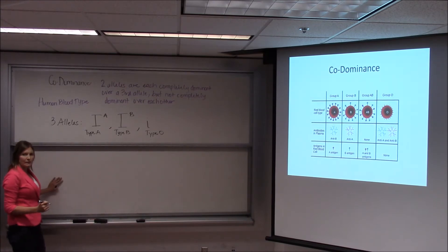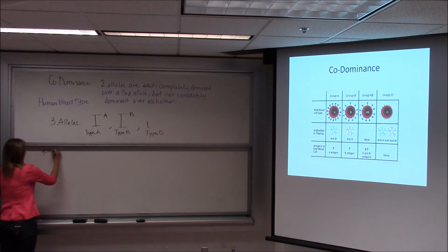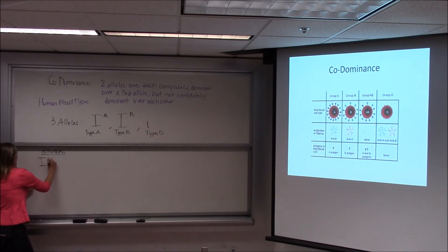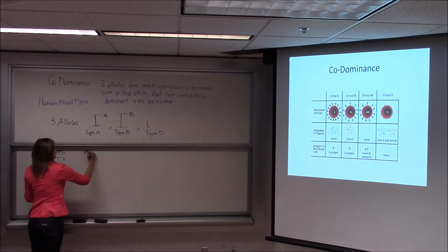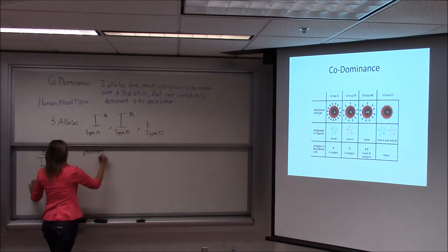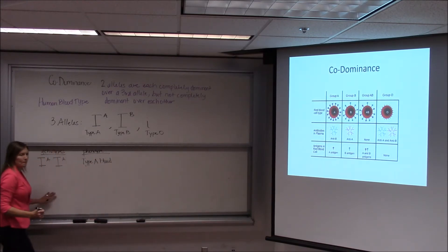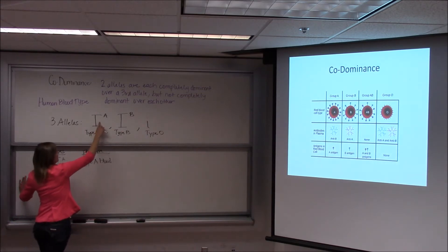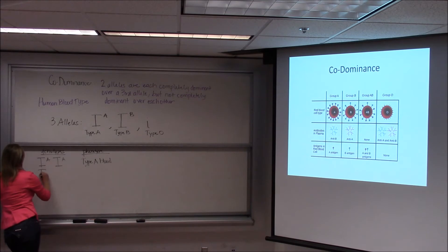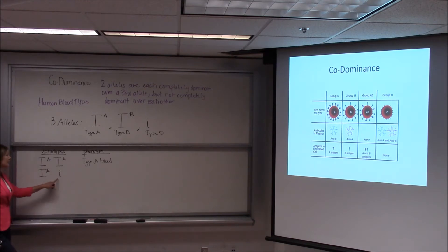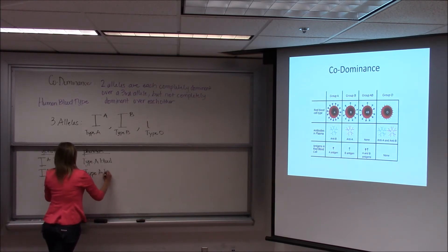Here are the possible genotypes. You can get two of the type A alleles, one from each parent — so you're homozygous for the type A allele, and your phenotype would be type A blood. Or maybe you got an A and an O — an A from one parent and an O from the other. The type A allele is completely dominant over the type O allele, so in this case you would be heterozygous but still have type A blood. We would say this person is heterozygous for the type A allele.